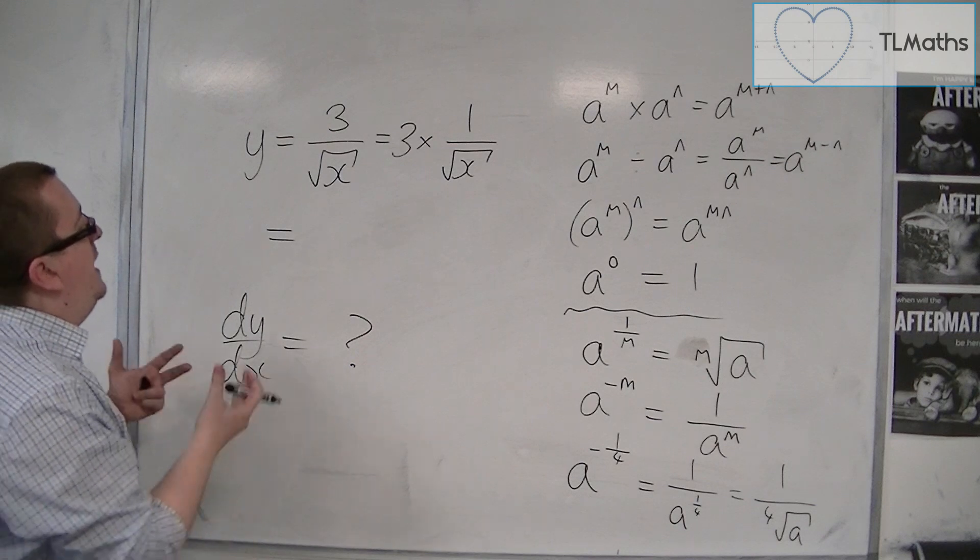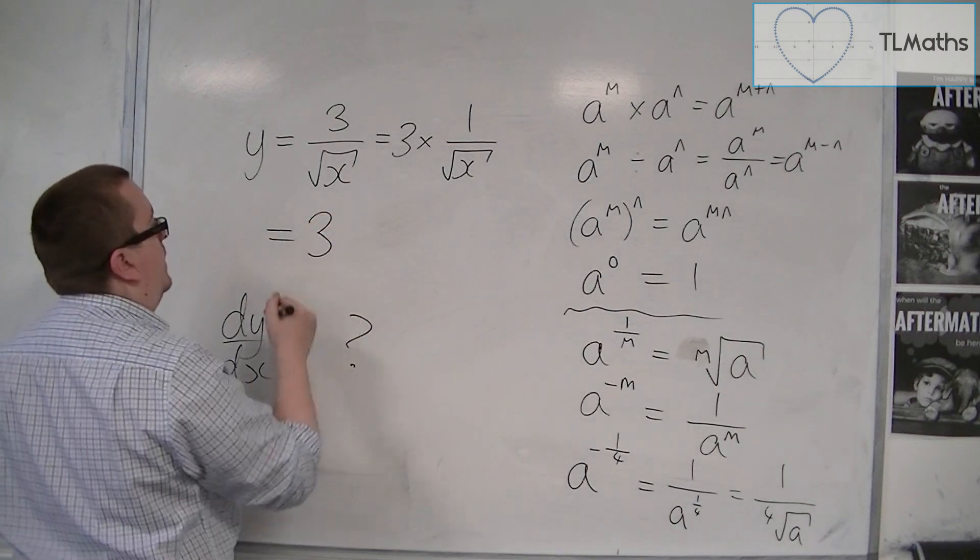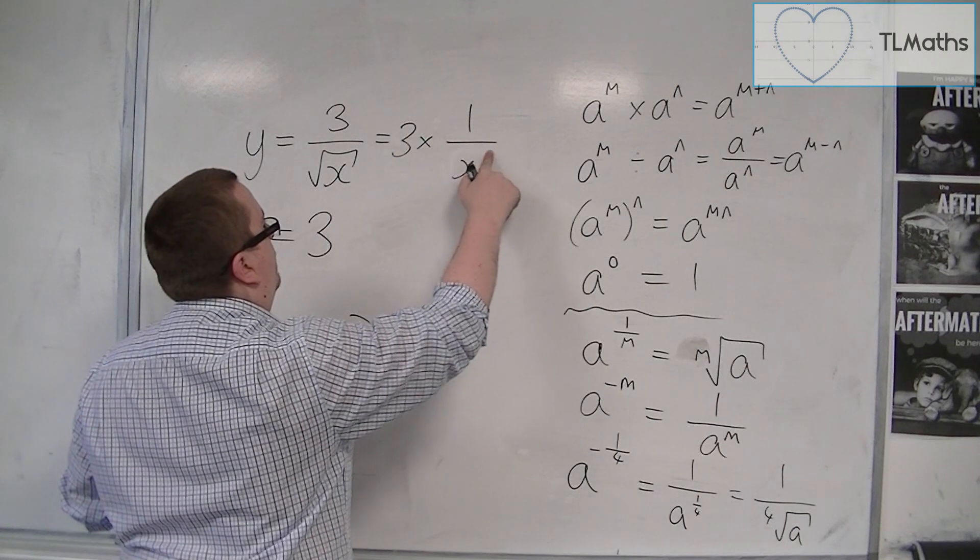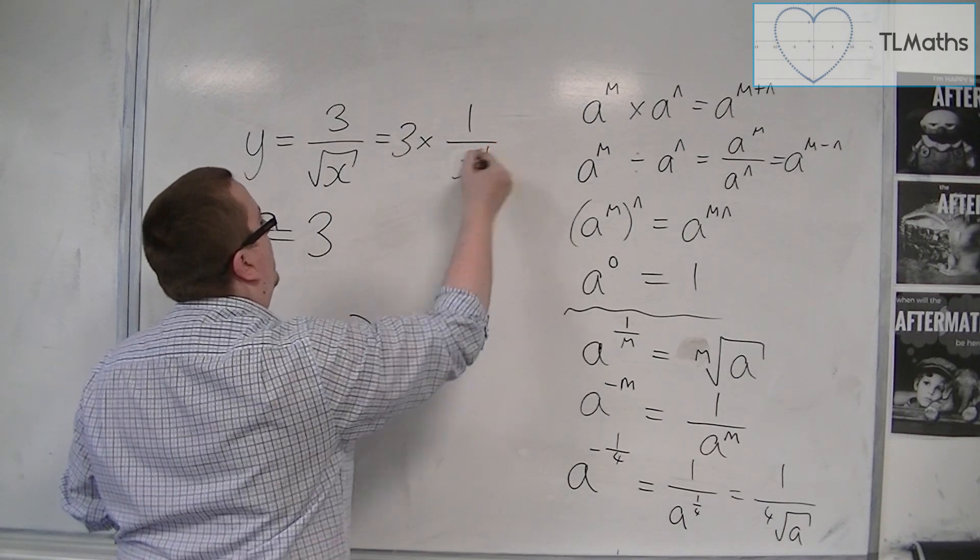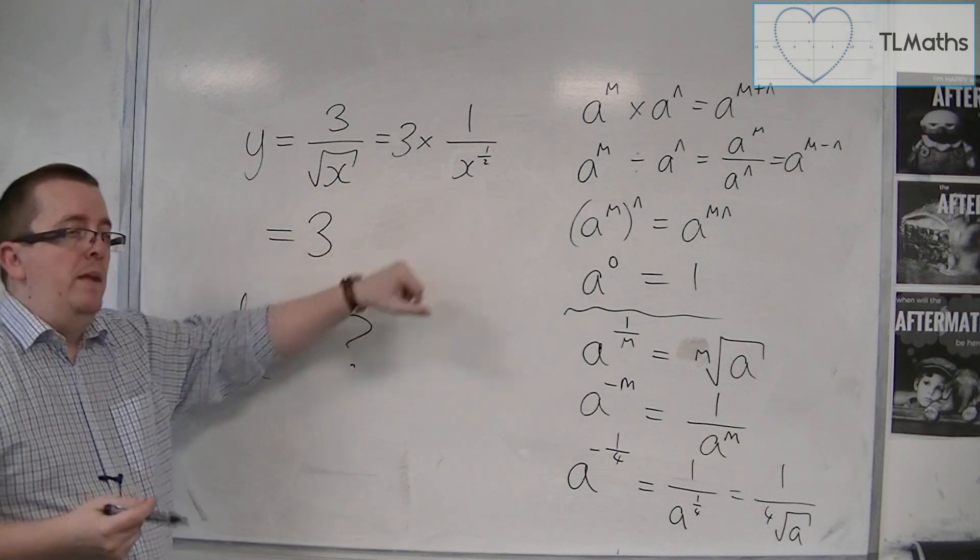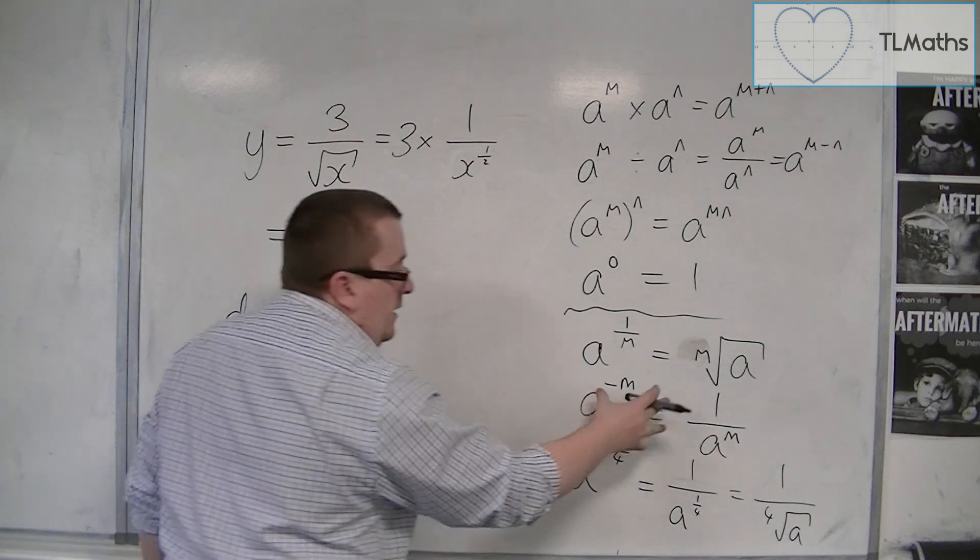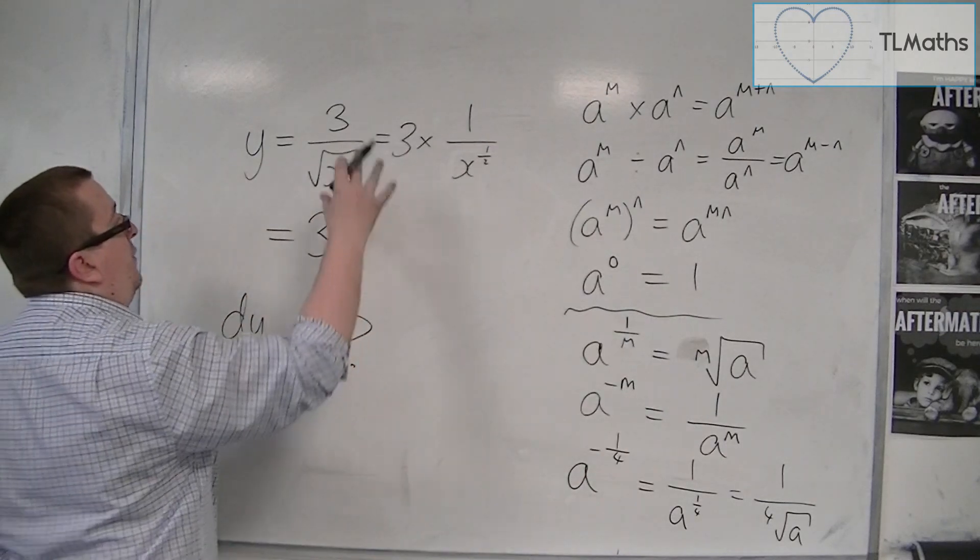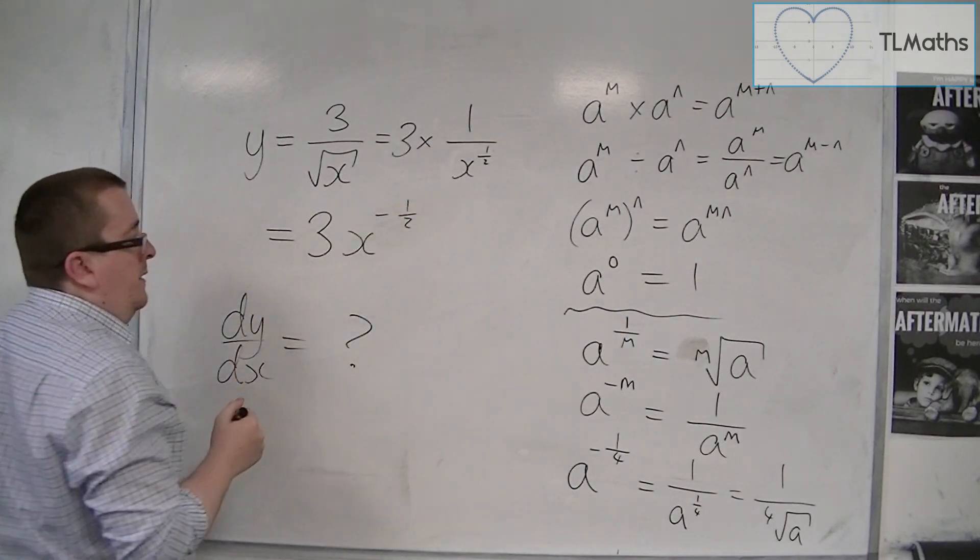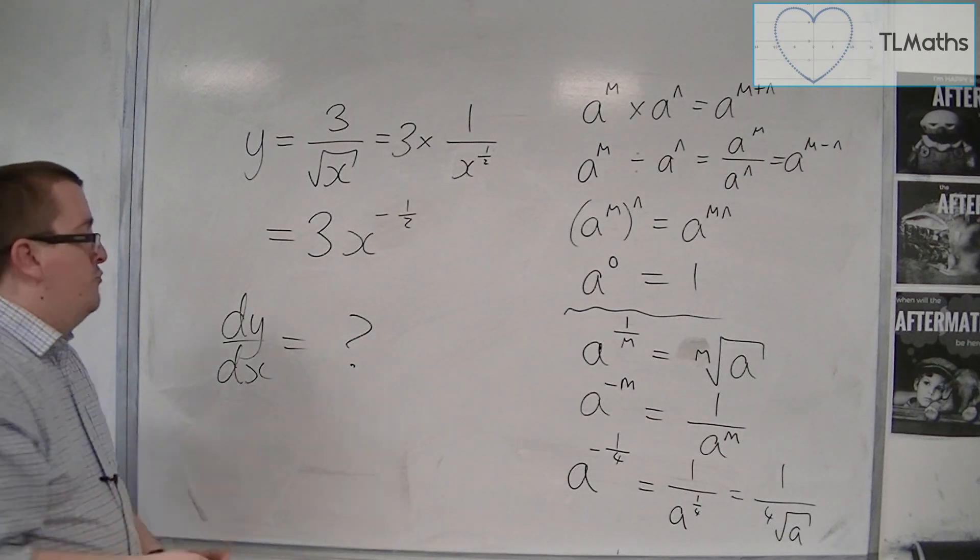So we have 3 lots of, well, the root x is x to the half. So I can replace the square root with x to the half. And because it's 1 over, we have this. So this is 3 lots of x to the minus a half.